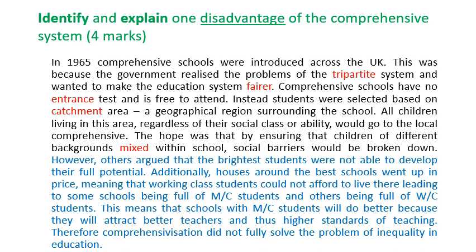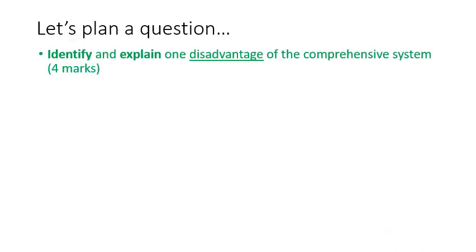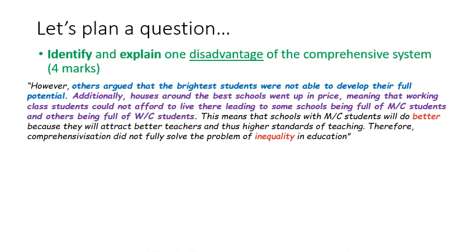So if we were to try and answer this question, let's look at this slide where we're going to plan it together. The section written in blue is the criticism section which will enable us to identify and explain a disadvantage. Others argue that the brightest students were not able to develop their full potential — because now all students went to the same schools, meaning they were full of mixed ability students. That boy targeted at grade 9 may not be able to reach his full potential because of mixed ability teaching, so therefore he's being held back. That's one disadvantage you could go on to explain for a PEEL paragraph.